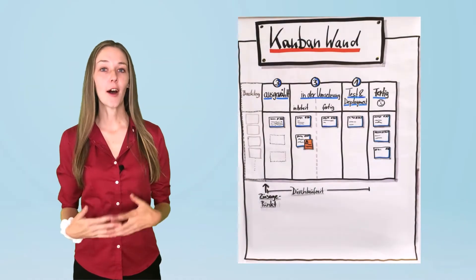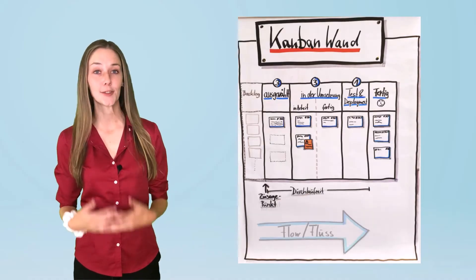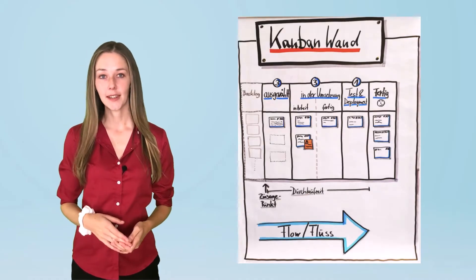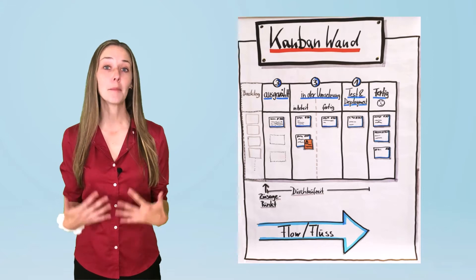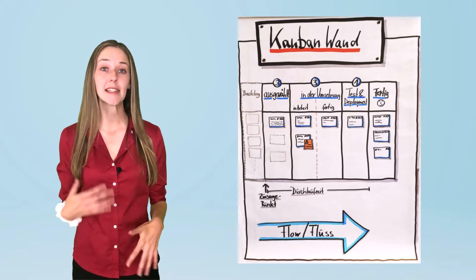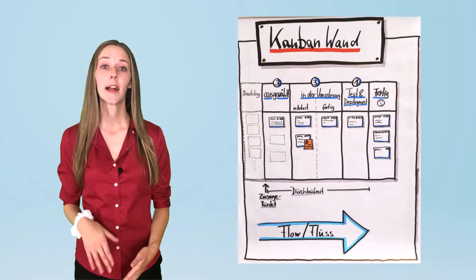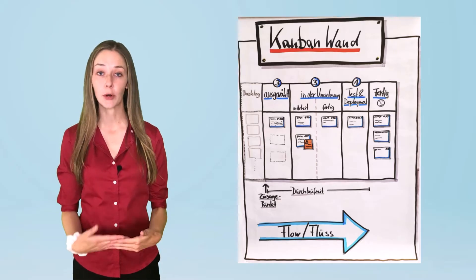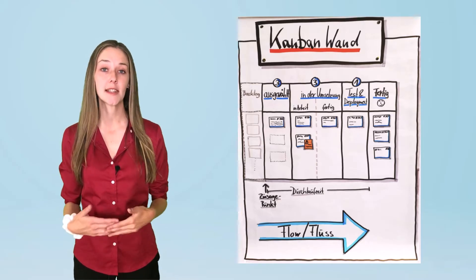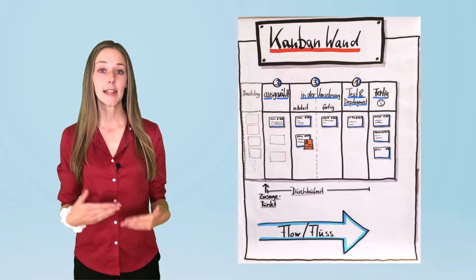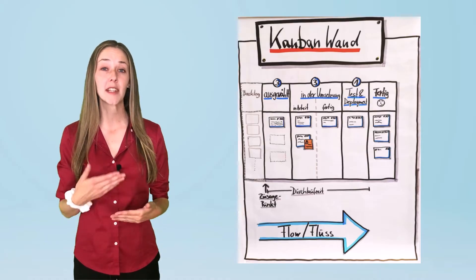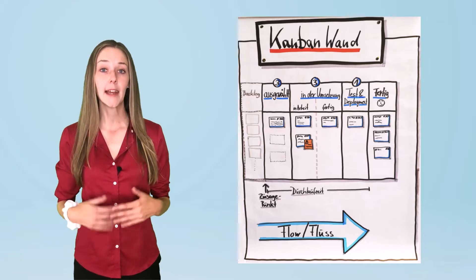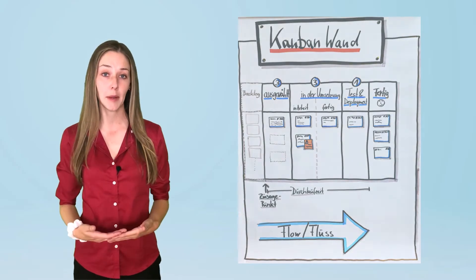This is why Kanban is often referred to as a flow-based, just-in-time development methodology. Feature development is not boxed into time-limited sprints. Feature development is continuous and ongoing. The most critical features are developed first, providing what's needed just-in-time for the client. To capture the work that's being done, the work that's been completed, and the work that needs to be completed, Kanban uses something called a Kanban board. It makes the process very visual.